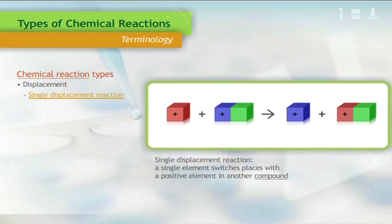Instead of using elements and compounds, let us look at this using colored blocks. The reactants are one red block and one blue and green compound block. The product of this single displacement reaction is one blue block and one red and green compound block.